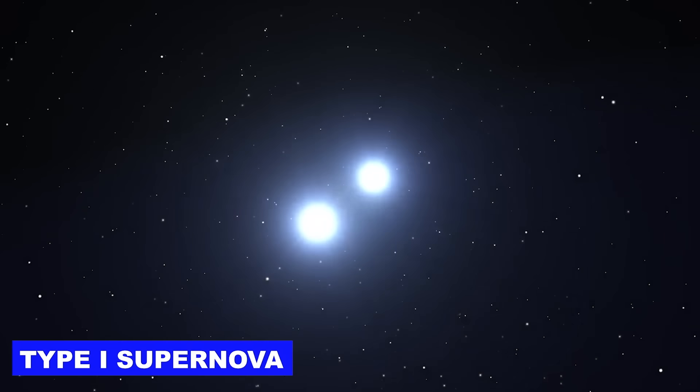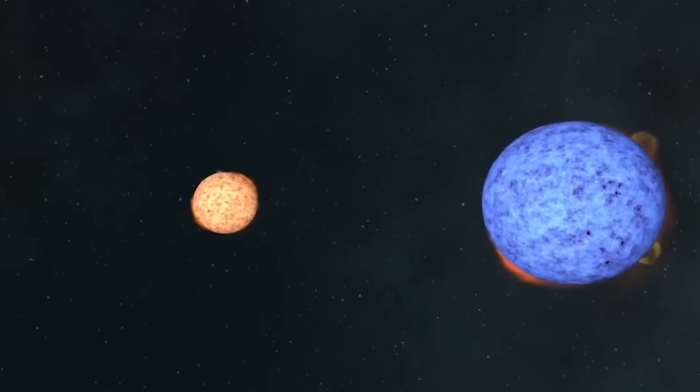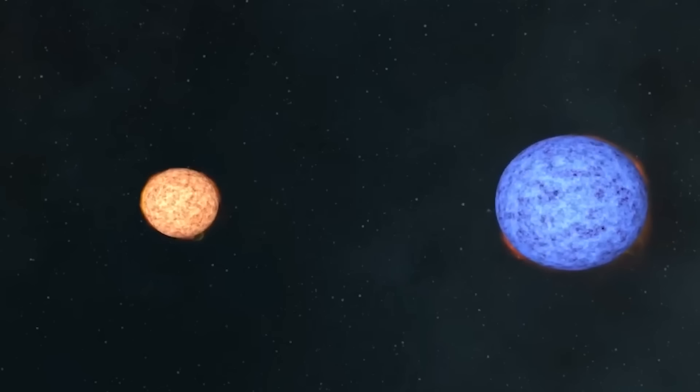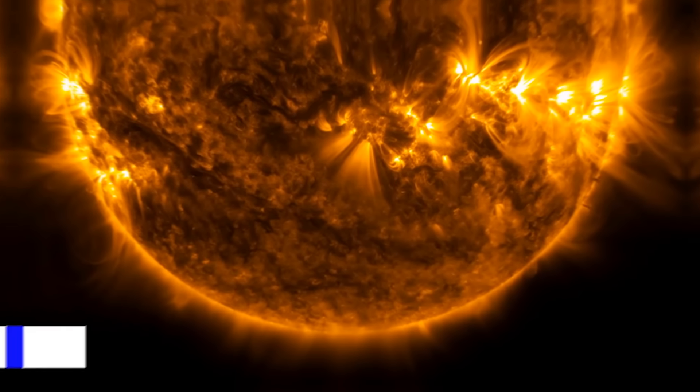There are two main categories of supernovae. The first, known as a type I supernova, occurs in a binary star system, where a white dwarf accumulates too much mass from its companion, triggering an uncontrolled nuclear reaction.